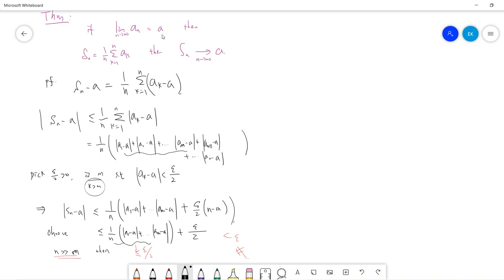by definition, since AN approach to A, so there is, when large enough, there exists M, when K greater than M, you get AK minus A divided by 2, less than epsilon divided by 2.